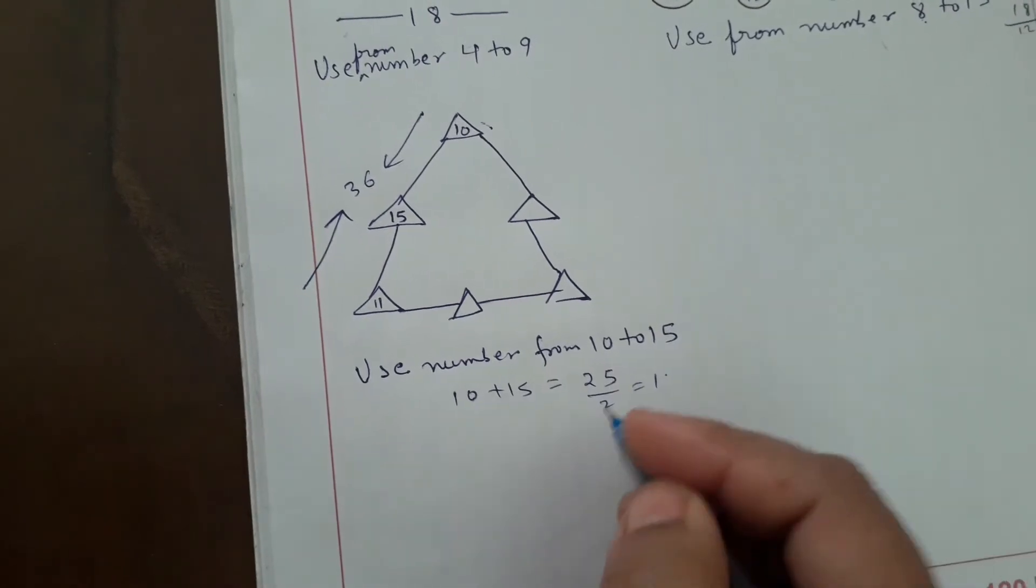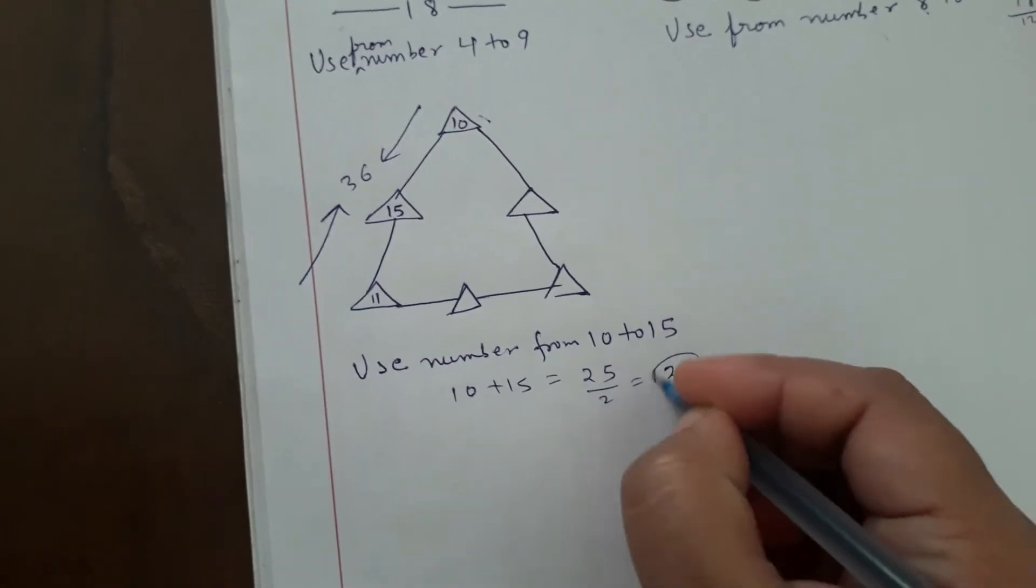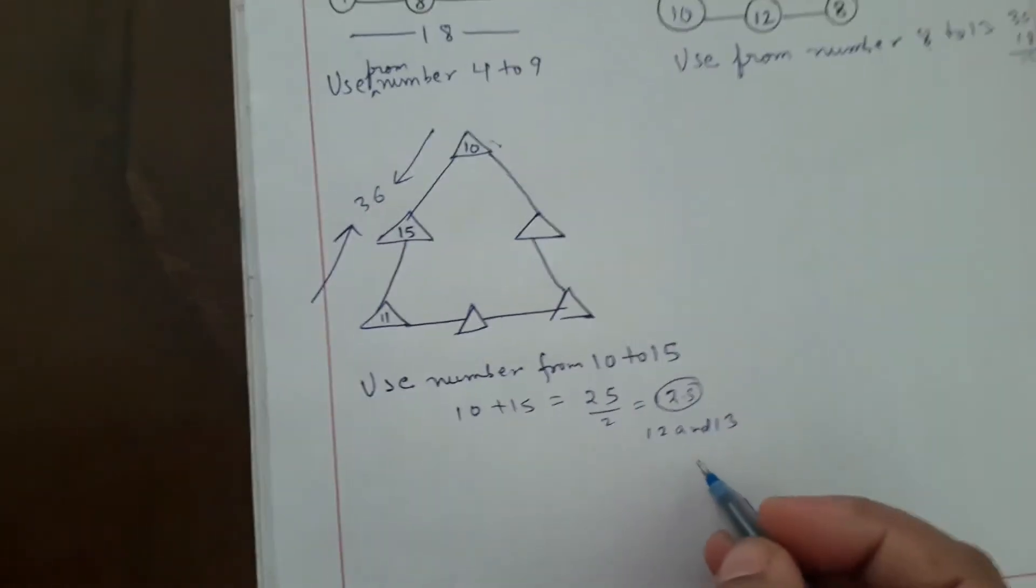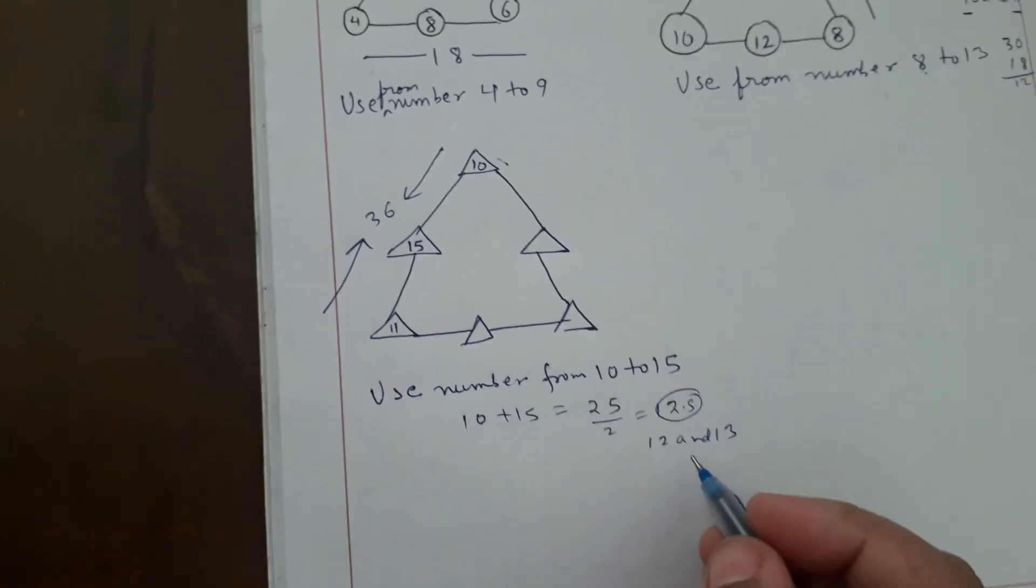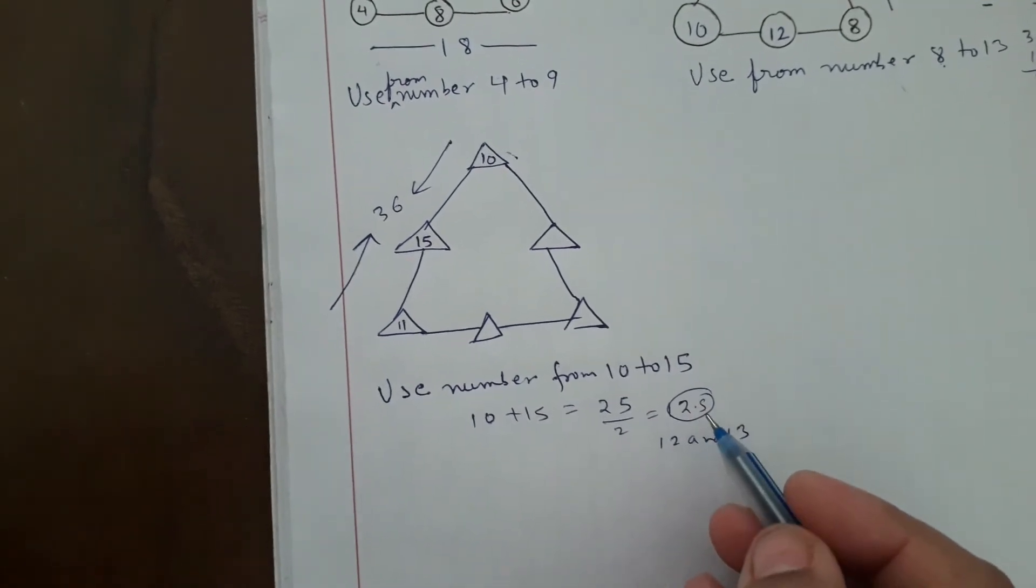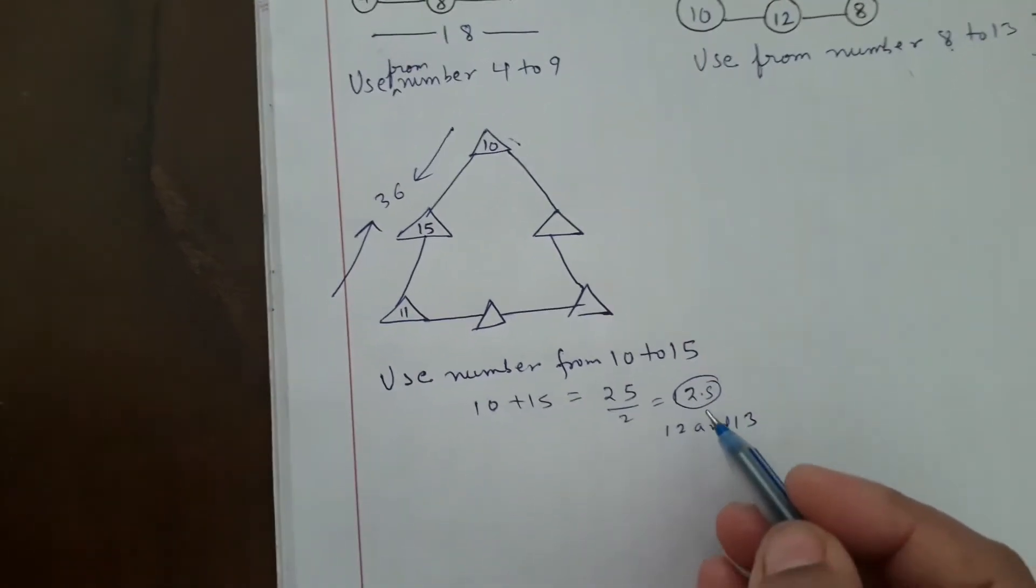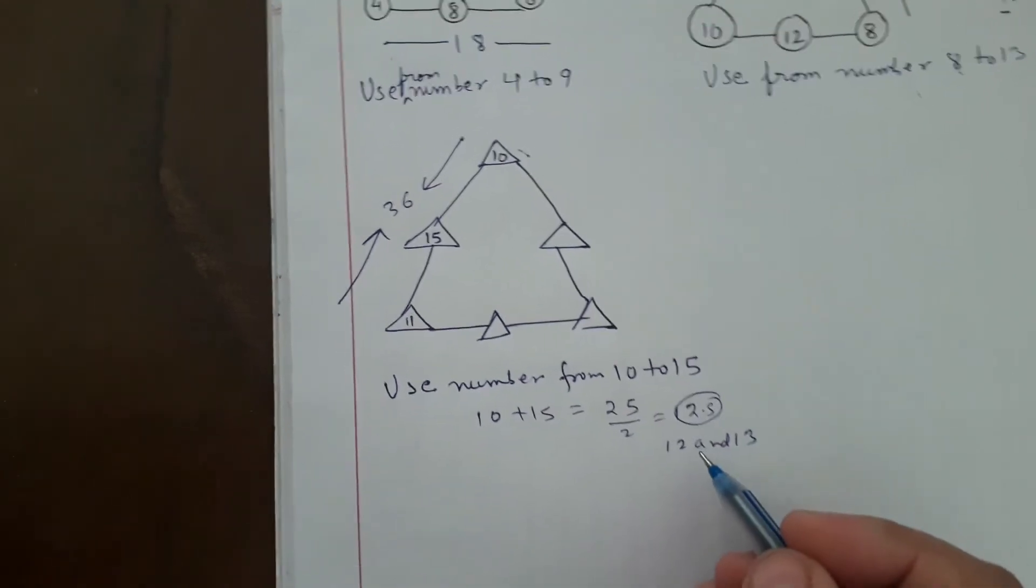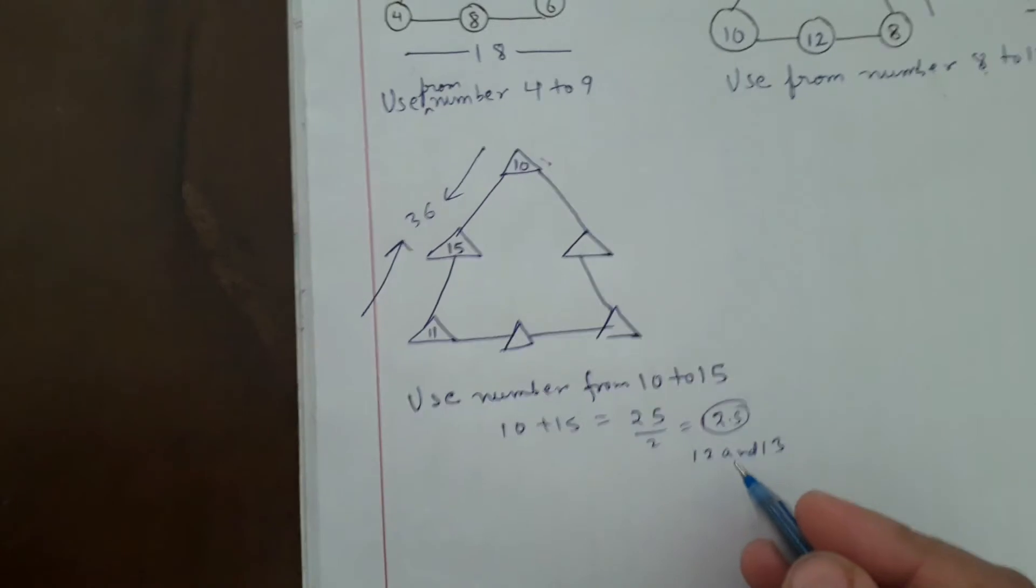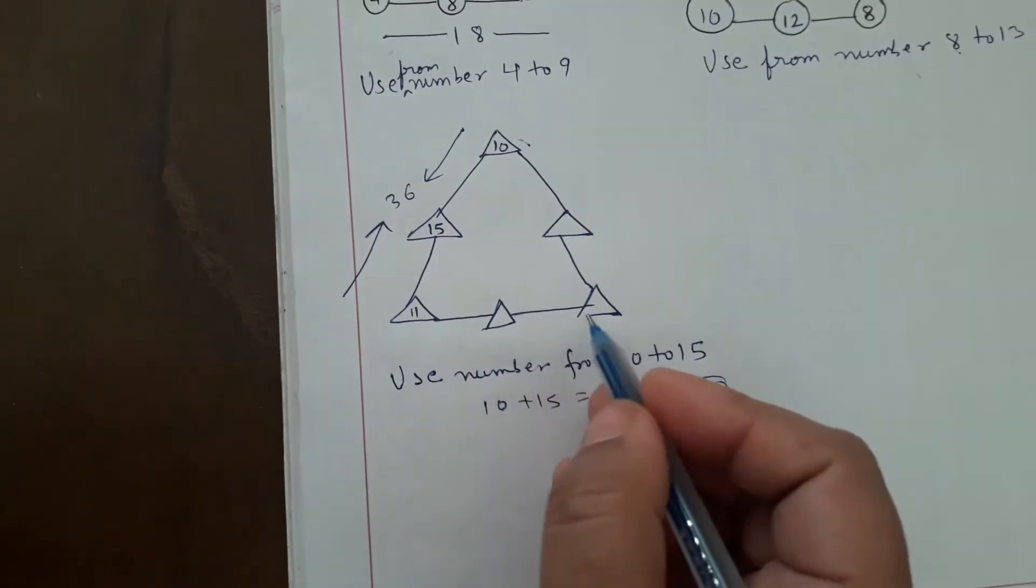12.5 means 12 and 13 - half of this number we have to search. So that if we add that number, it will come 25. 12.5 means 12 and 13 will be the missing numbers. Now 12 or 13, where will we fit them?